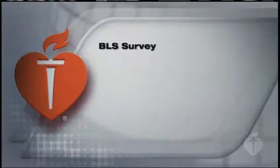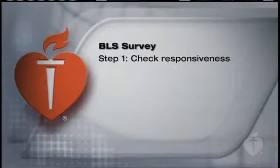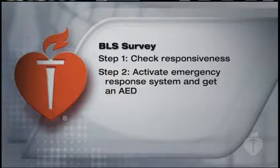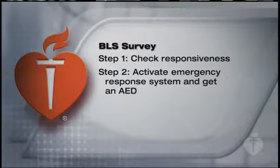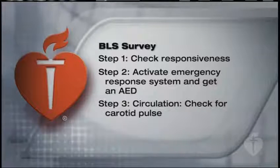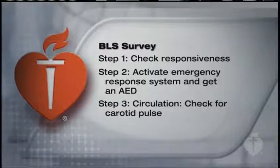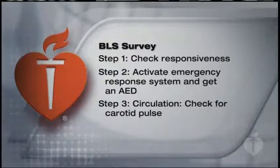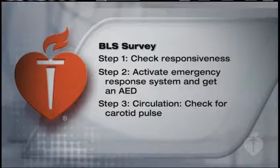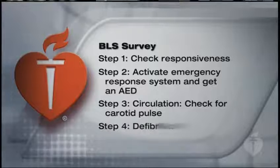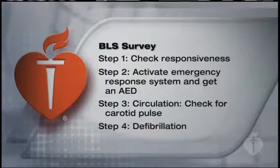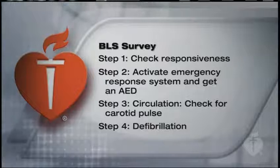Let's review the four steps of the BLS survey. Step 1: check responsiveness — tap and shout and scan the chest for movement. Step 2: activate the emergency response system and get an AED. Step 3: circulation — check for a carotid pulse; if you cannot feel a pulse within 10 seconds, give cycles of 30 chest compressions followed by 2 ventilations. Step 4: defibrillation — as soon as possible, connect an AED or defibrillator and, if indicated, deliver a shock. The best chance of a patient surviving cardiac arrest depends on high-quality BLS.